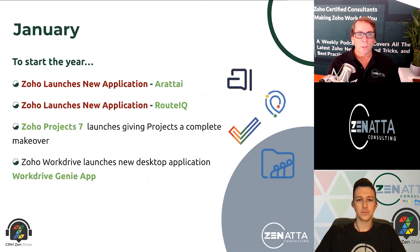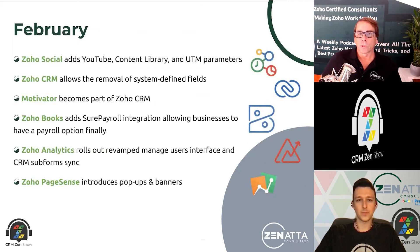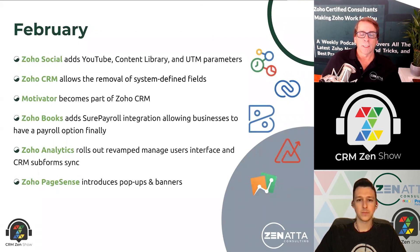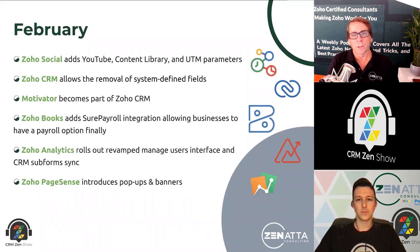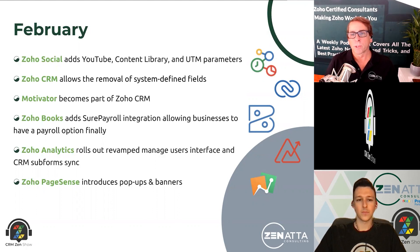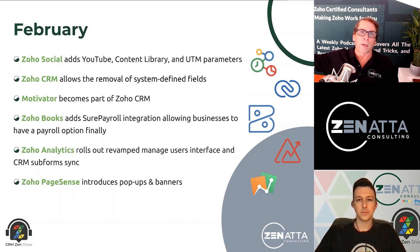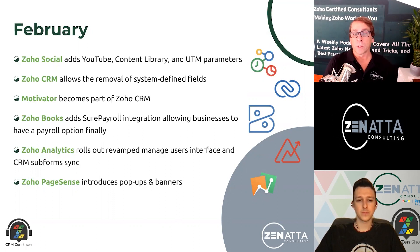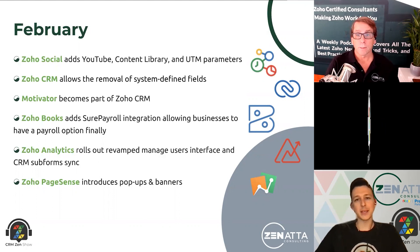Moving into February, Zoho Social had a big update — the ability to add YouTube content, with a whole content library you could pull from. Zoho Social allows you to manage all your social media content: Facebook, Twitter, LinkedIn, connecting all of them and scheduling out all your social media posts in advance. The UTM parameters update was a big one as well — being able to know where traffic came from is a huge part of inbound marketing to get everything attributed.